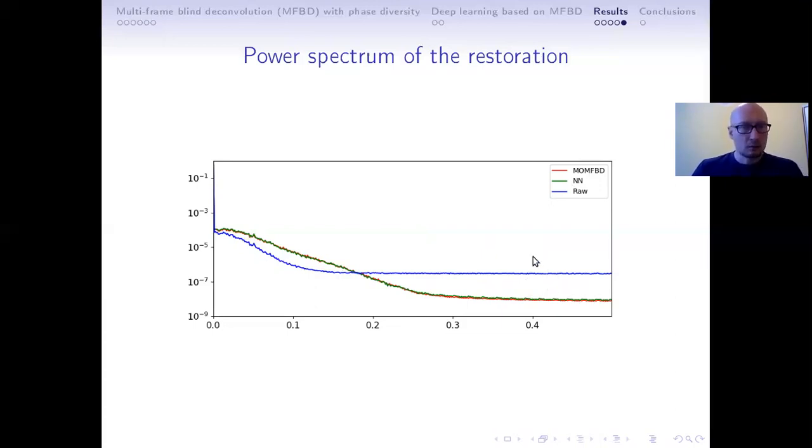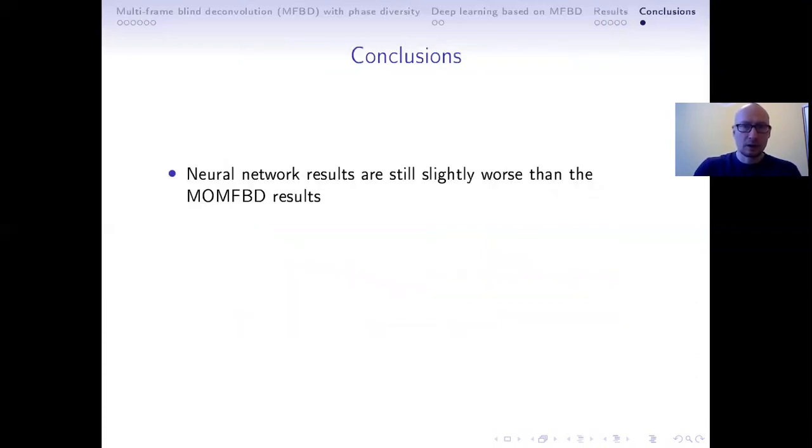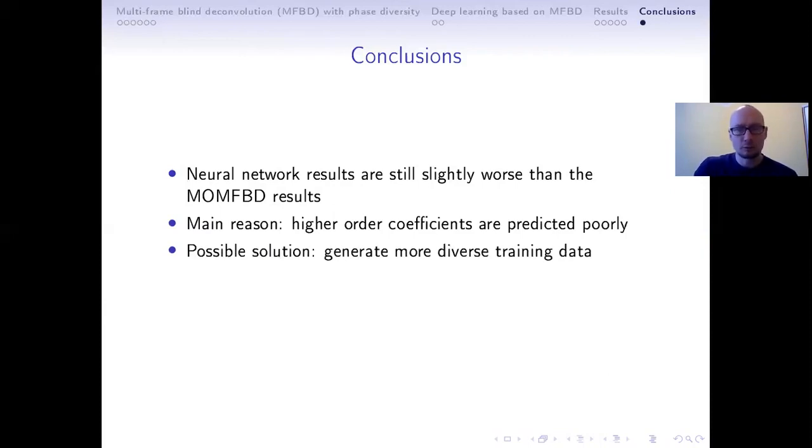So we see that there is a peak potential in the method we propose. And to come to conclusions, as we saw, neural network results are still slightly worse than the multi-object multi-frame blind deconvolution results. And the main reason for that we saw was that the higher order coefficients are basically predicted very poorly. One possible solution is to just generate more independent and diverse training data, more atmospheric frames for each small batch as well as more independent objects.